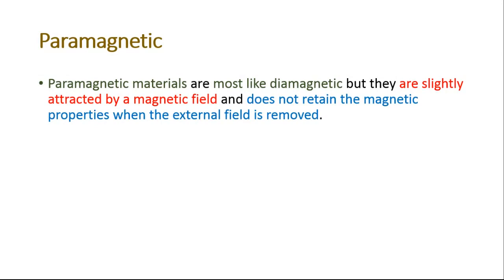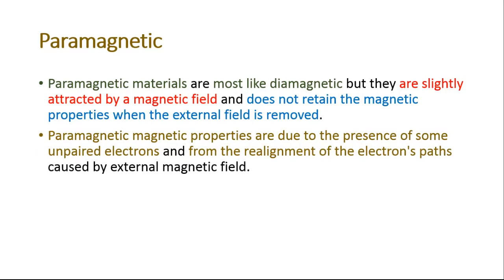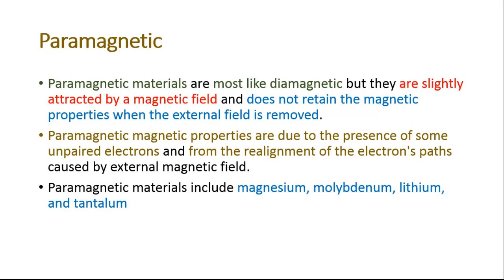Paramagnetic materials are most like diamagnetic, but they are slightly attracted by a net magnetic field and do not retain the magnetic properties when the external field is removed. Paramagnetic properties are due to the presence of some unpaired electrons and from the realignment of the electron's path caused by the external magnetic field. Paramagnetic materials include magnesium, molybdenum, lithium, and tantalum.